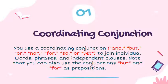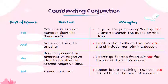The first conjunction we are going to discuss is coordinating conjunction. So what is coordinating conjunction? You use a coordinating conjunction such as 'and,' 'but,' 'or,' 'nor,' 'for,' 'so,' or 'yet' to join individual words, phrases, and independent clauses. Note that you can also use the conjunction 'but' and 'for' as a preposition. Here are the coordinating conjunctions, the kinds of words, the function of each word, and also the example of the word in a sentence.